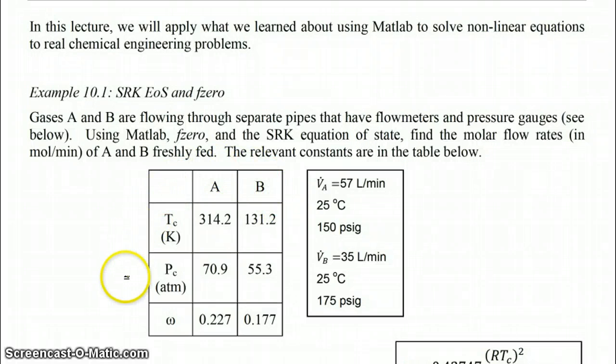Now the relevant constants of the gases for the SRK equation of state are here. We have the critical temperature, critical pressure, and this value omega which is the acentric factor. And these things are specific to the specific gases. And then we also have in this table our conditions for our two pipes.